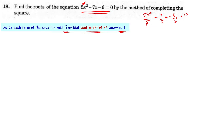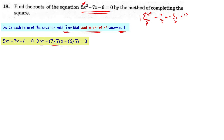After dividing by 5, the coefficient of x² becomes 1. Now the equation becomes x² - 7/5·x - 6/5 = 0. Let us take the constant term to the other side: x² - 7/5·x = 6/5.